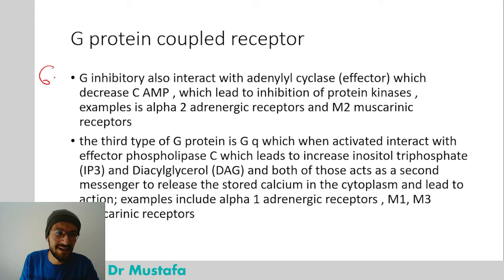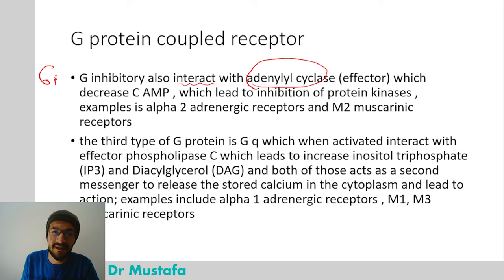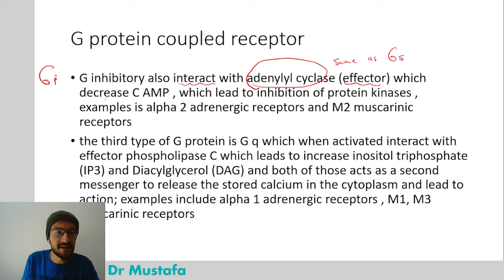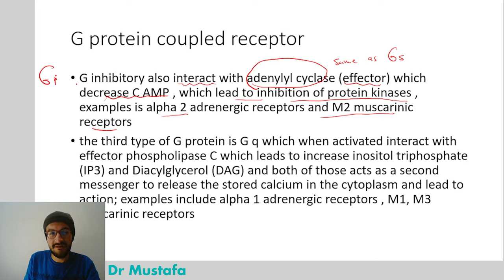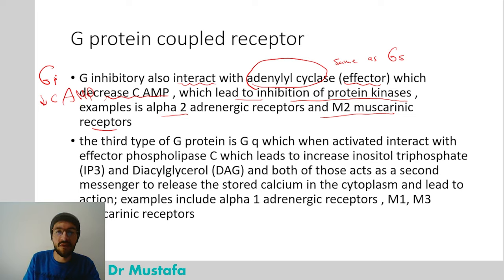The GI (G inhibitory) also interacts with adenyl cyclase — the same effector as GS — but the difference is that it decreases cyclic AMP, whereas GS increases it. Decreasing cyclic AMP leads to inhibition of protein kinases. Examples include alpha-2 adrenergic receptors and M2 muscarinic receptors.